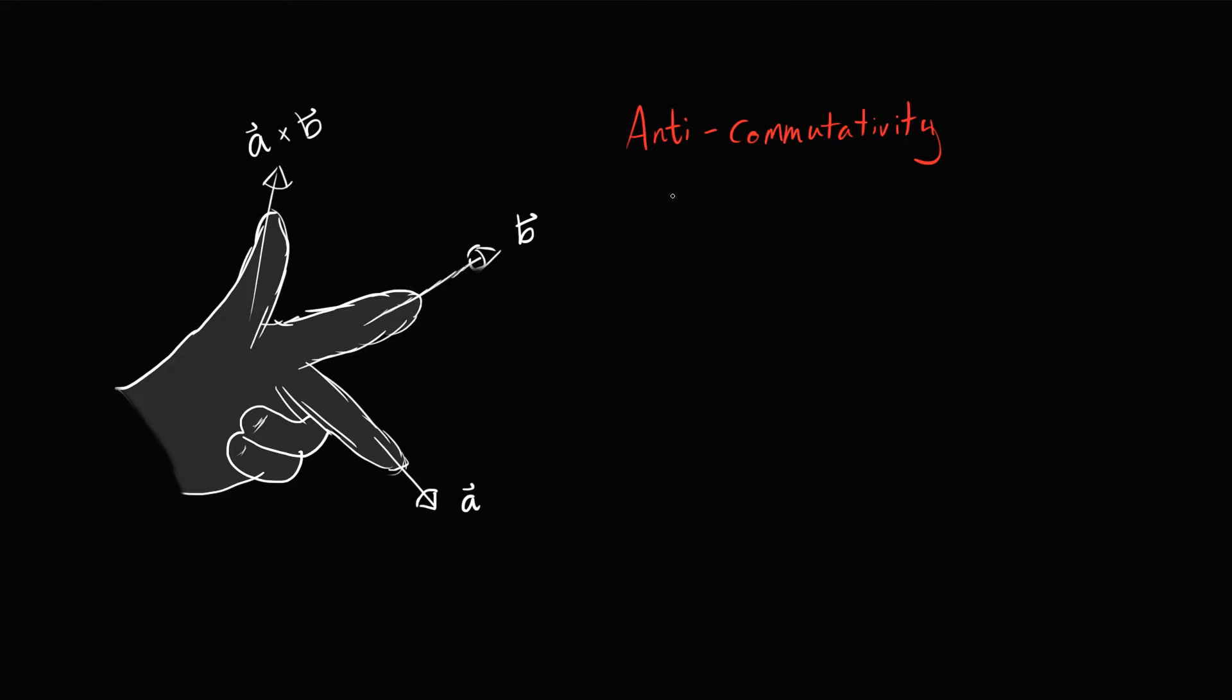Usually, when you multiply two numbers, we would say that A times B is equal to B times A. But with the cross product, this is not necessarily true. And in fact, when you have A cross B, this is equal to negative B cross A. And that should hopefully make sense, because if we do B cross A, then you would switch your middle finger with your index, and your index with your middle finger, and then your thumb would be pointing in the opposite direction.